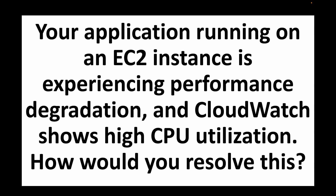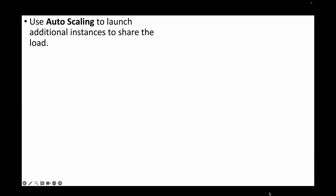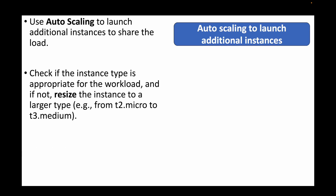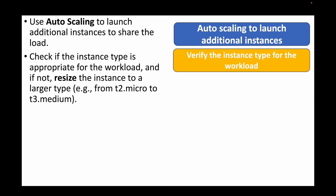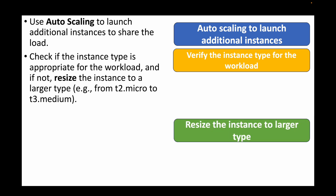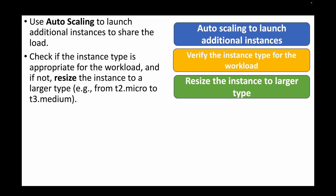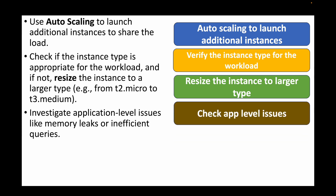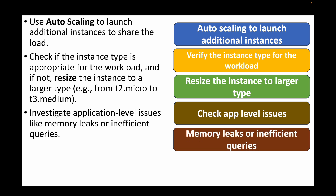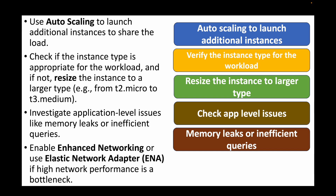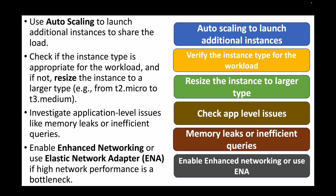The next question: your application on an EC2 instance is experiencing performance degradation and CloudWatch shows high CPU utilization — how would you resolve this? We can use auto scaling to launch new instances to share the load. We can check if the instance type is appropriate for the workload and resize it to a larger type, such as going from t2.micro to t2.medium or t2.medium to t2.large. We can also investigate application-level issues like memory leaks or inefficient queries that are driving up CPU load. We can also make use of enhanced networking or Elastic Network Adapter if there is a network performance bottleneck.